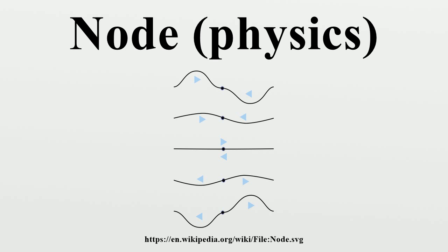In transmission lines, a voltage node is a current anti-node, and a voltage anti-node is a current node. Regarding boundary conditions, where the nodes occur in relation to the boundary reflecting the waves depends on the end conditions. Although there are many types of end conditions, the ends of resonators are usually one of two types that cause total reflection.